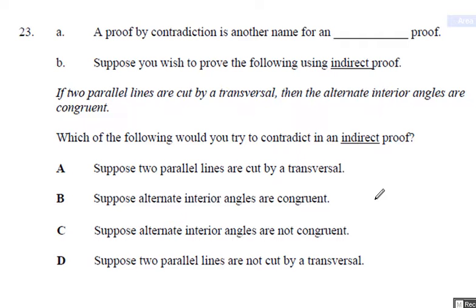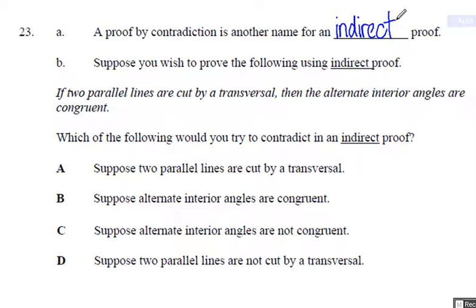Problem number 23. Proof by contradiction is another name for an indirect proof. This is the proof where you try to prove that the opposite of what you're trying to prove is indeed false.